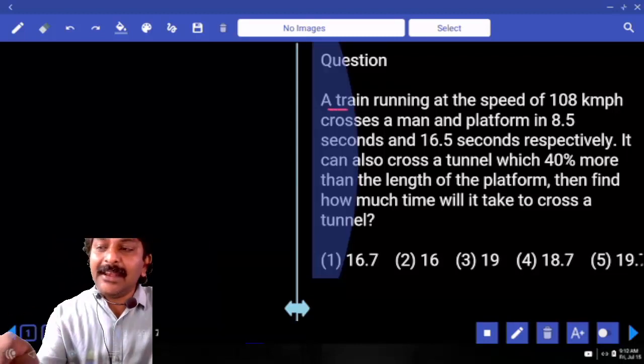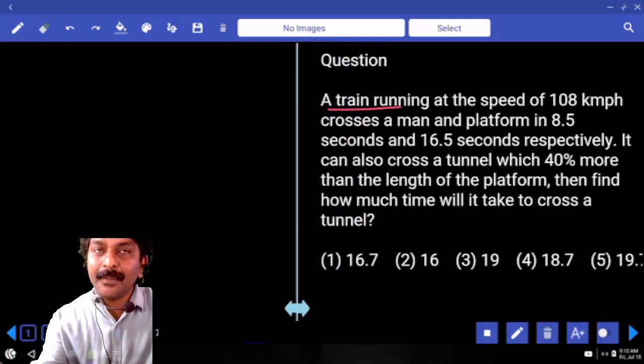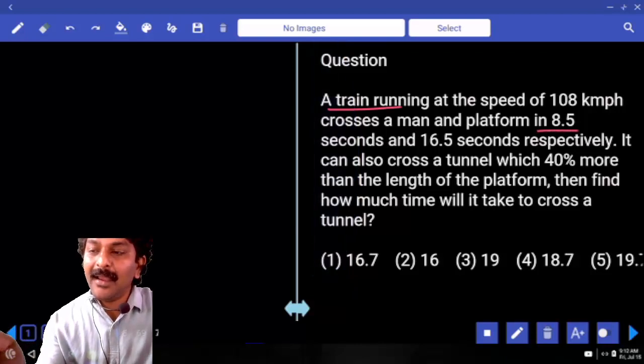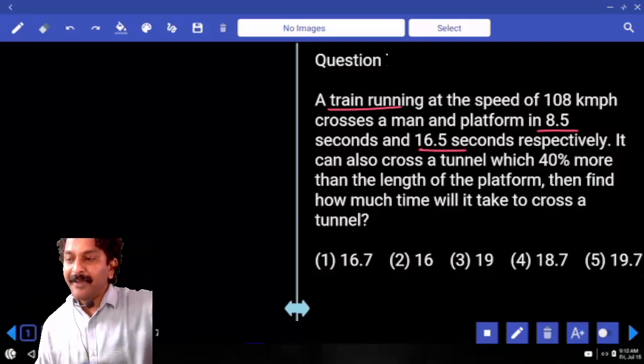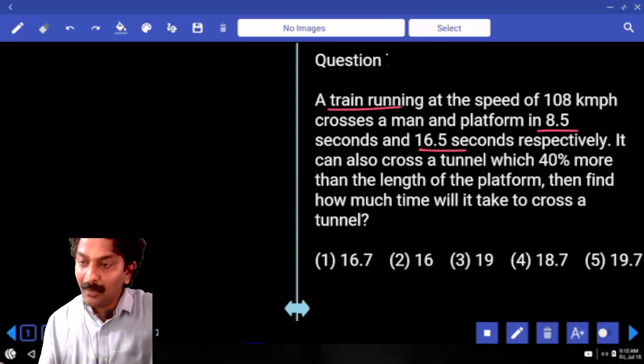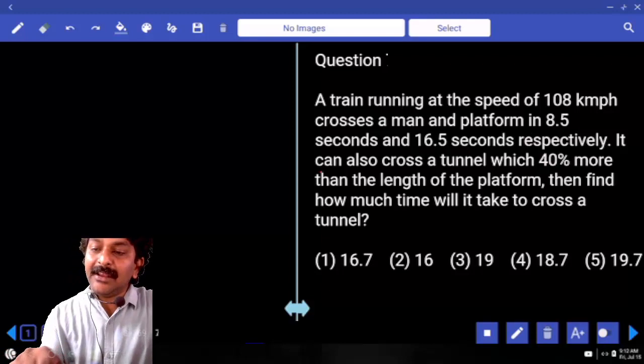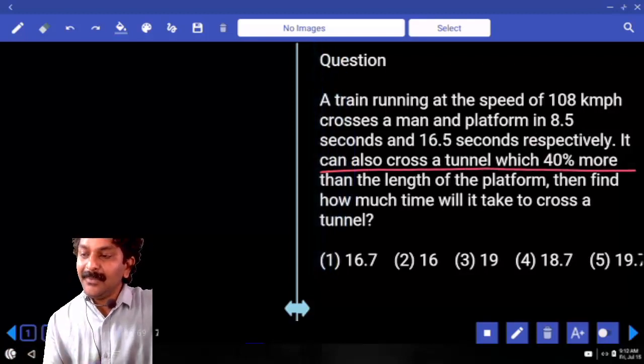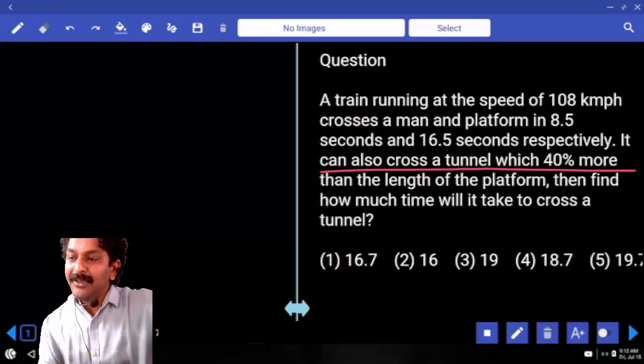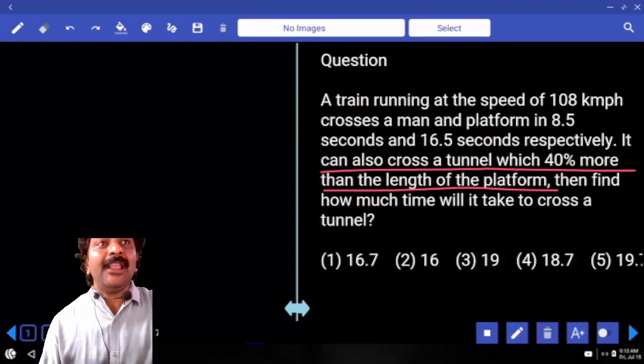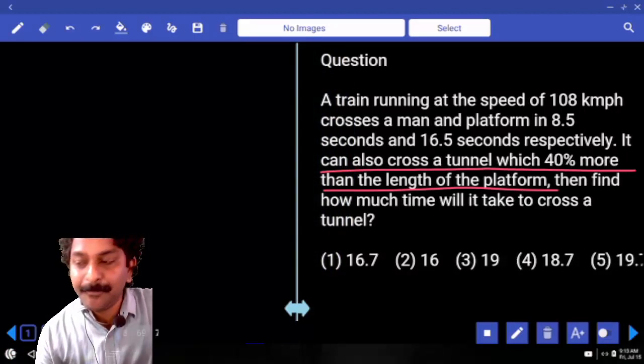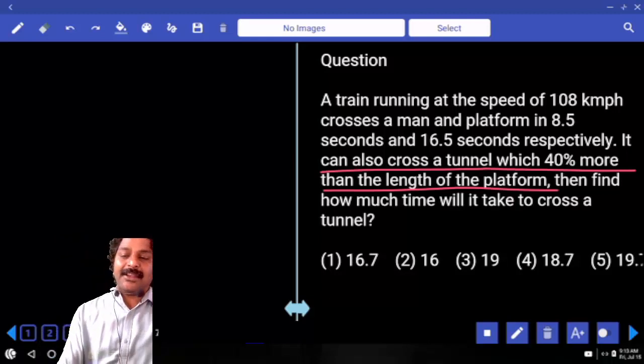A train can cross the man and platform in 8.5 and 16.5 seconds respectively. Now it can cross a tunnel which is 40% more than the length of the platform. Then find how much time will it take to cross the tunnel.